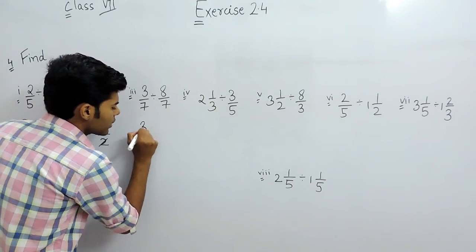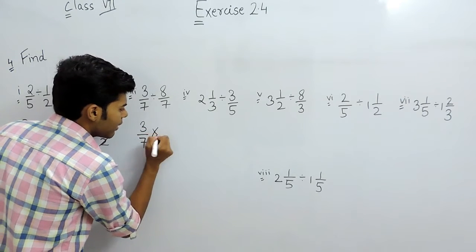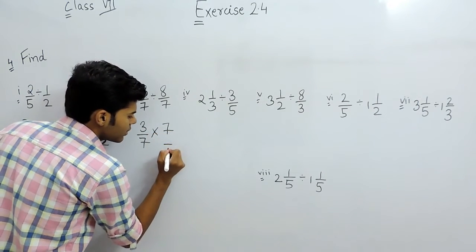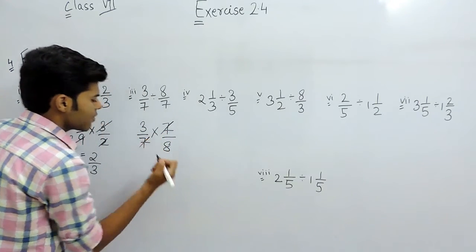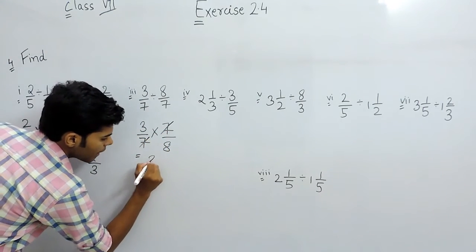Now in this one, 3 by 7 multiplied with 7 by 8, 7 and 7 will be cancelled out and answer will be 3 by 8.